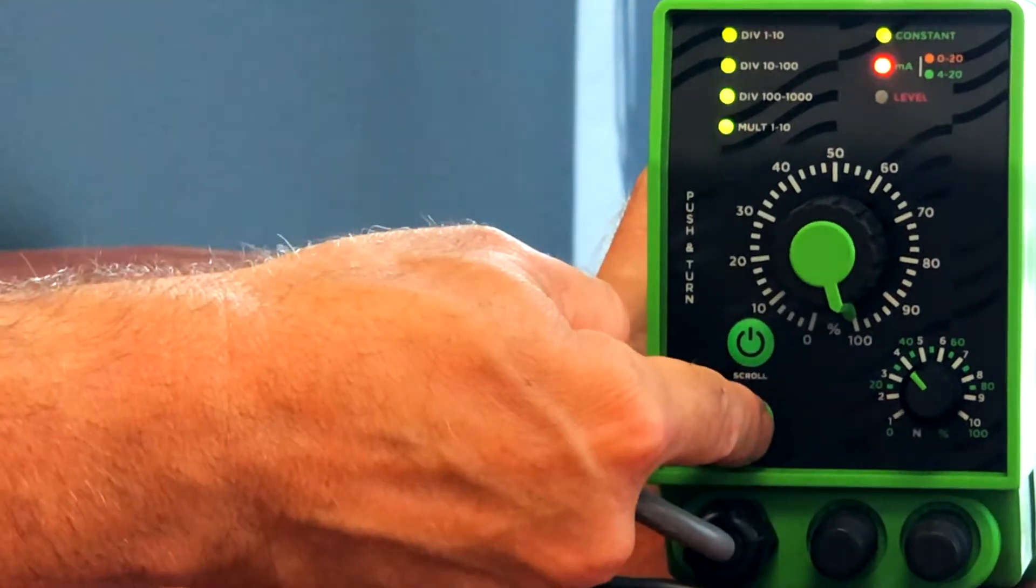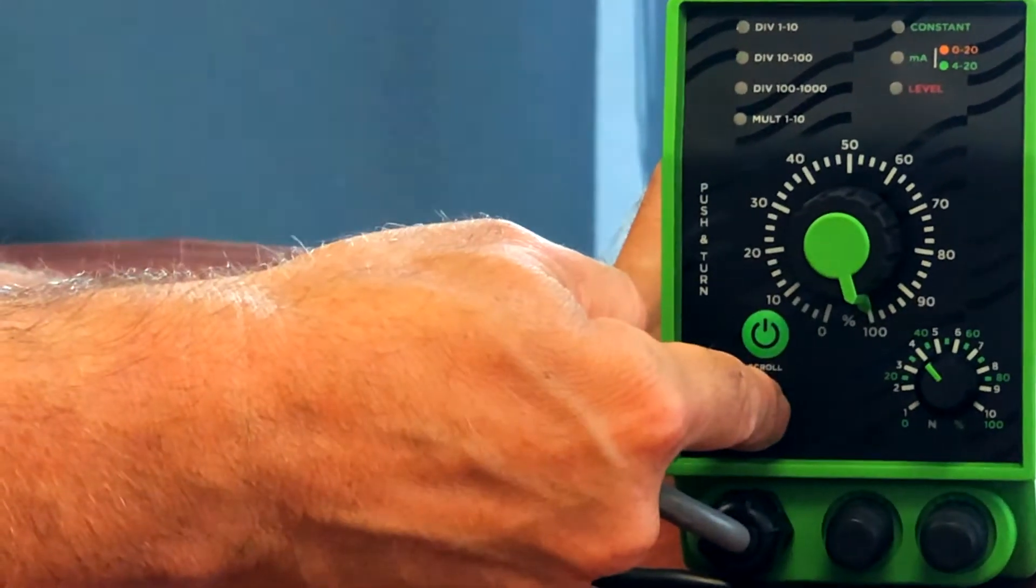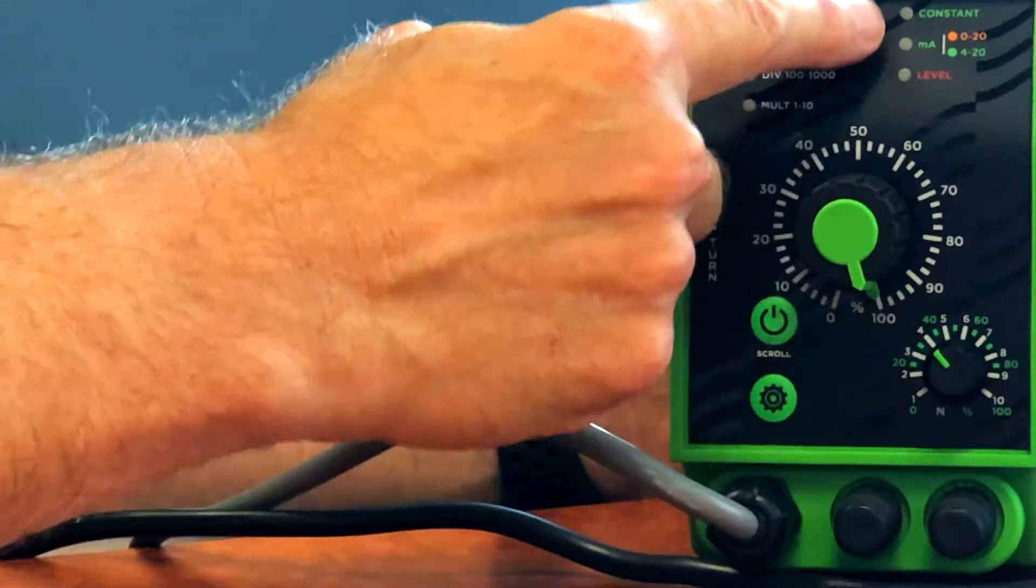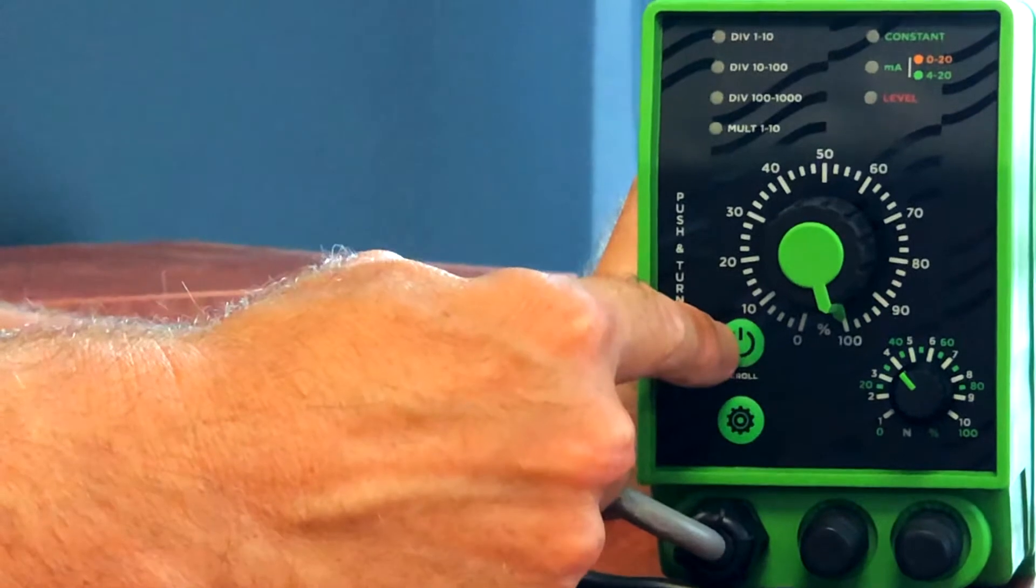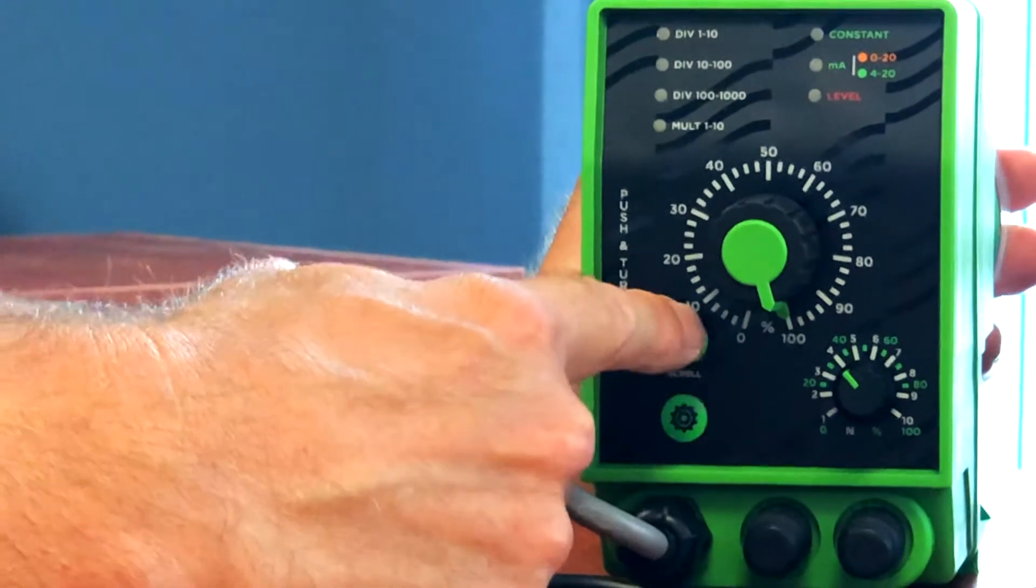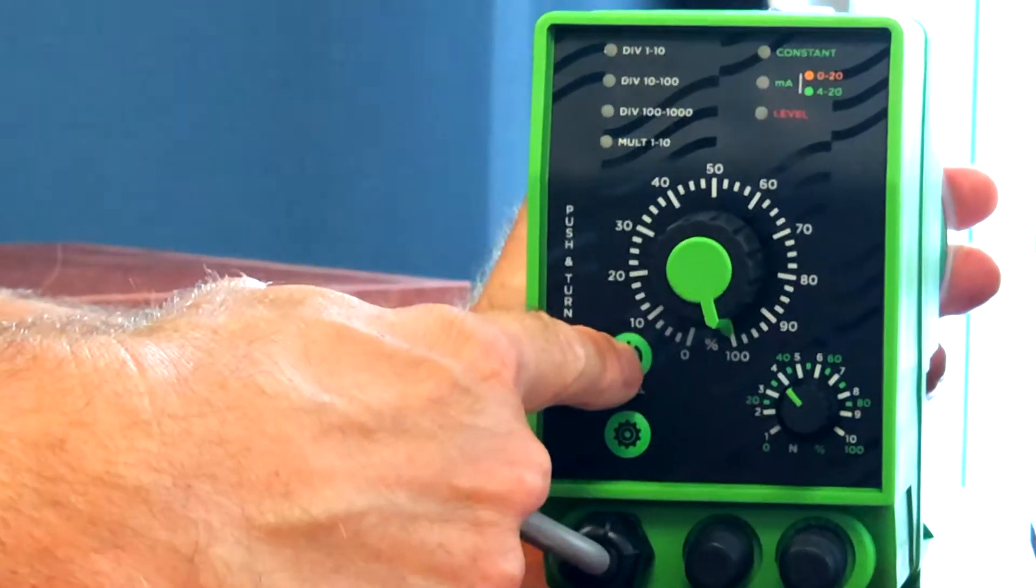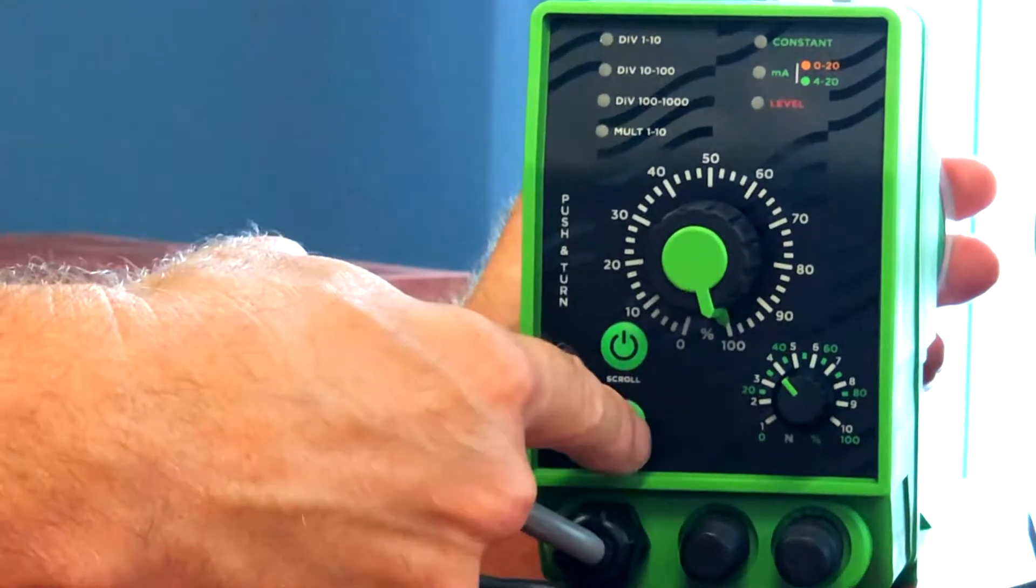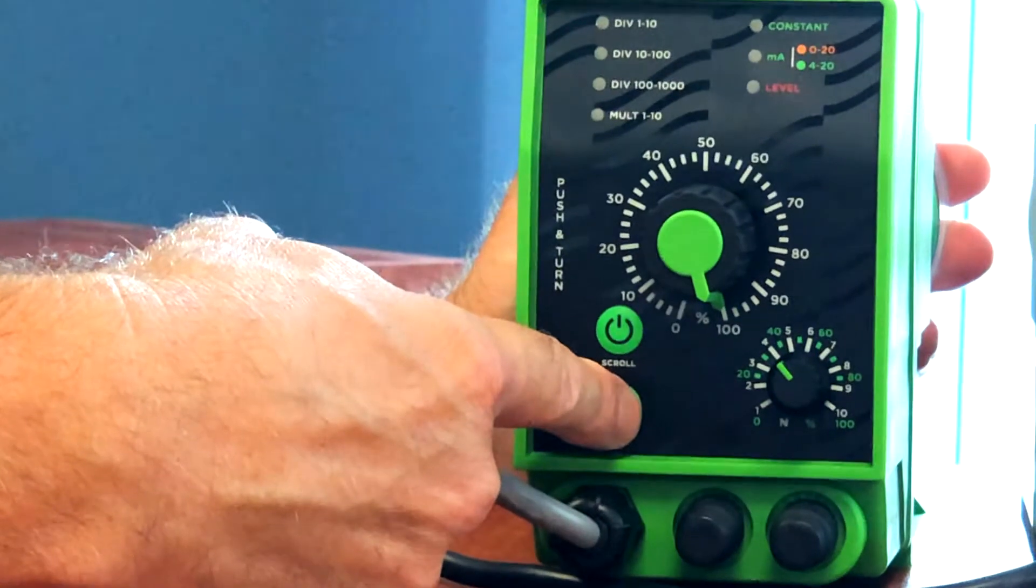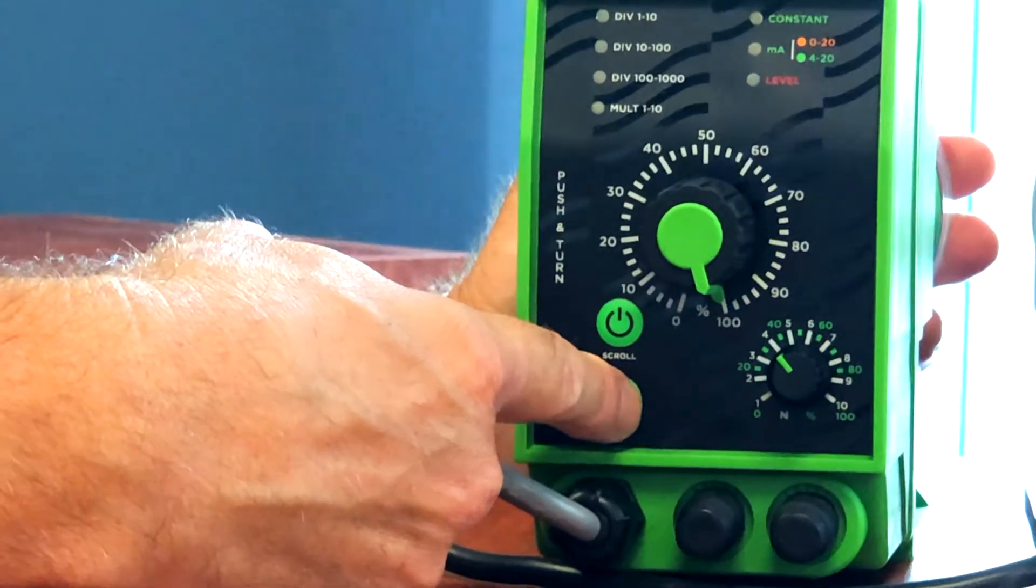What you do then is press that one more time, and then you can scroll in order to move the LED to another position. So the power button also doubles up as a scroll button. And what one does is you move it to the right position, it's now on multiply 1 to 10. Then we press the settings or programming button, which saves that setting.